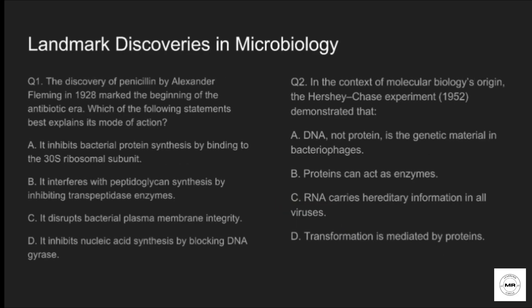Now the topic is landmark discoveries in microbiology. Question one: the discovery of penicillin by Alexander Fleming in 1928 marked the beginning of the antibiotic era. Which statement best explains its mode of action? Option A: it inhibits bacterial protein synthesis by binding to the 30S ribosomal unit. Option B: it interferes with peptidoglycan synthesis by inhibiting the transpeptidase enzyme. Option C: it disrupts bacterial plasma membrane integrity. Option D: it inhibits nucleic acid synthesis by blocking DNA gyrase. The correct answer is option B — it interferes with peptidoglycan synthesis by inhibiting the transpeptidase enzyme.